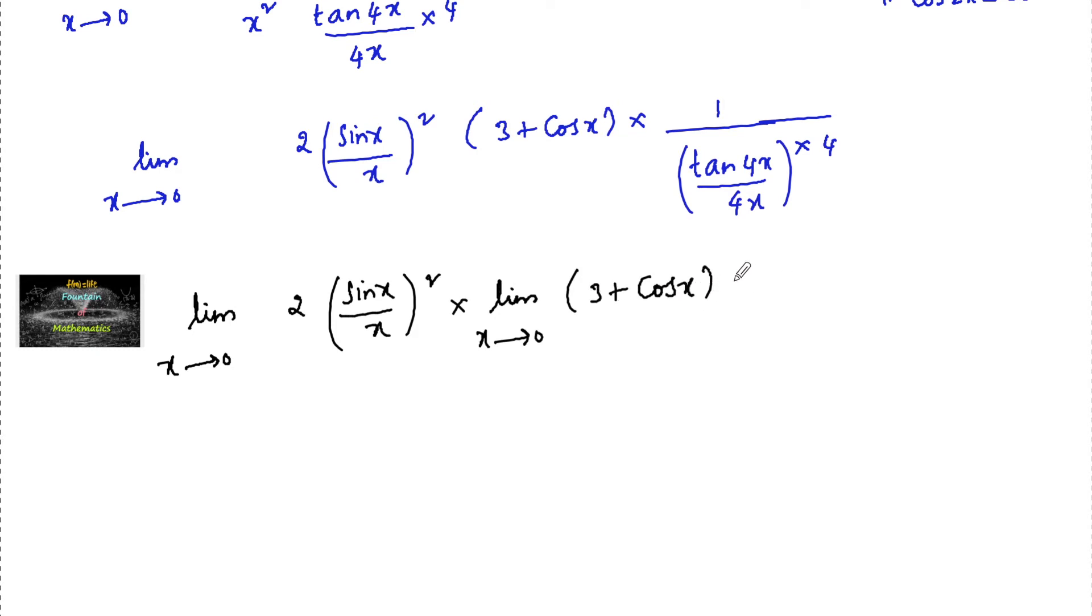of (3 + cos x), 1 upon 4, limit extends to 0 of (tan 4x / 4x).